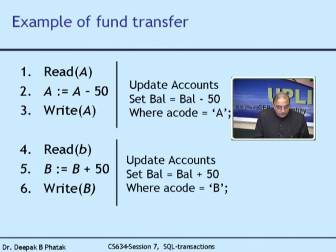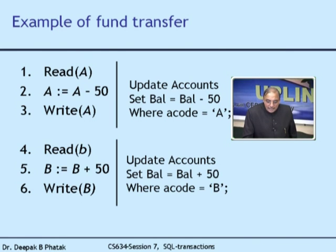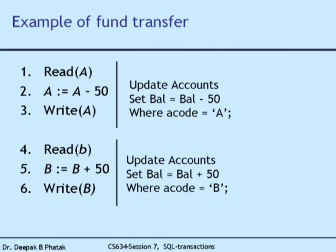What happens when multiple users are involved? Here are the SQL statements: 'UPDATE accounts SET bal = bal - 50 WHERE account_code = A'. This single SQL statement performs all three steps — read, subtract, write — for account A. Similarly, a second UPDATE statement handles account B. Notice that these are two independent SQL statements, and each SQL statement is a complete program.